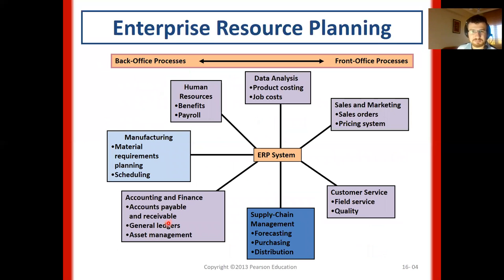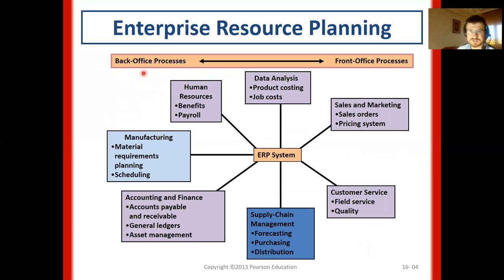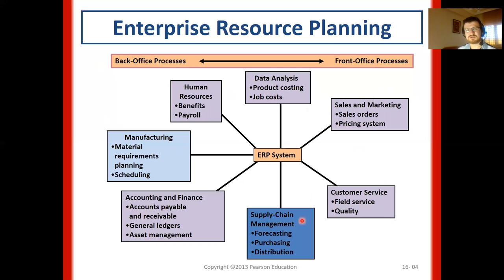ERP integrates almost all functions of businesses. Human resources, manufacturing, and accounting are located at the back-office processes, and sales, marketing, and customer service are located on the front-office processes — and they are all integrated in ERP systems. Even supply chain operations and logistics operations are included.